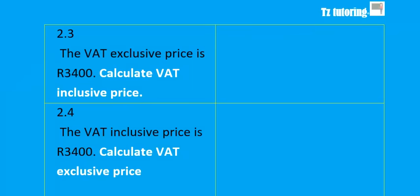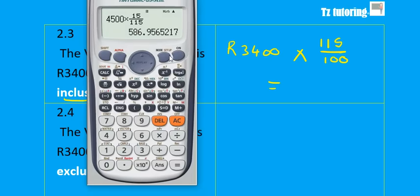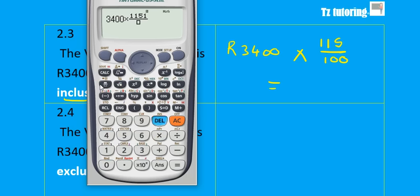If the VAT-exclusive price is R3400 and you must calculate the VAT-inclusive price, you add 15% on top. So: 3400 × 115/100 = R3910. The VAT-inclusive price is R3910.